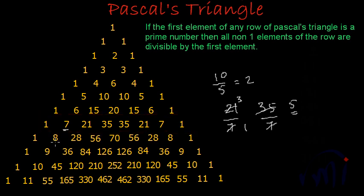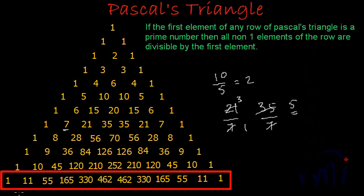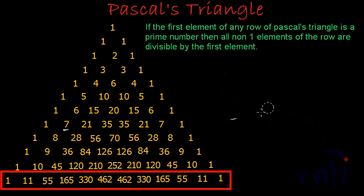In the eighth row, eight is the first number and it is a compound number. In the ninth row, nine is also a compound number, and in the tenth row, ten is a compound number again. But for the eleventh row, the first element is eleven, which is a prime number. We have a whole lot of numbers other than eleven and one in this row, so let's check how many are divisible by eleven.